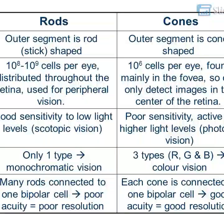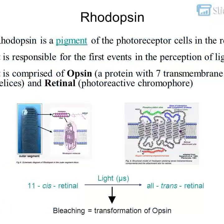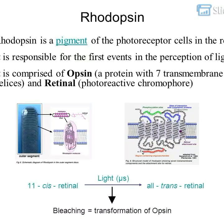Rhodopsin is a pigment of the photoreceptor cells in the retina. It is responsible for the first events in the perception of light. It is comprised of opsin, a protein with seven transmembrane helices, and retinol, a photoreactive chromophore.